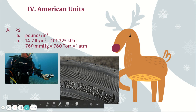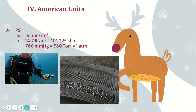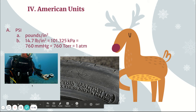So the complete conversion: 1 atm = 760 torr = 760 mmHg = 101.325 kPa = 14.7 PSI. You might see 15 PSI when you Google it, but we'll use 14.7 for more precision. In your notebook, I'll show you examples of how to use all of these as conversion factors — so stay tuned for that.